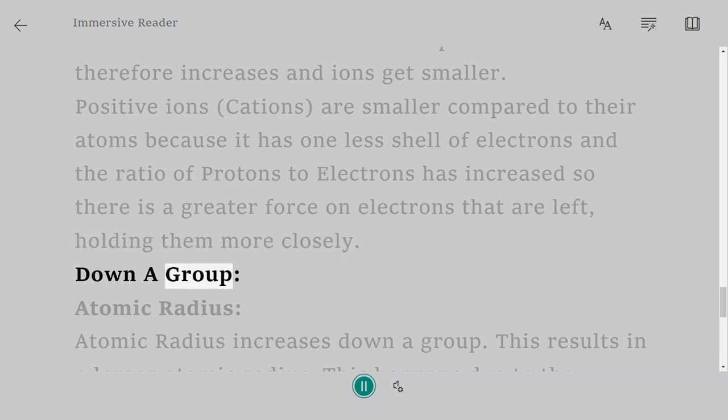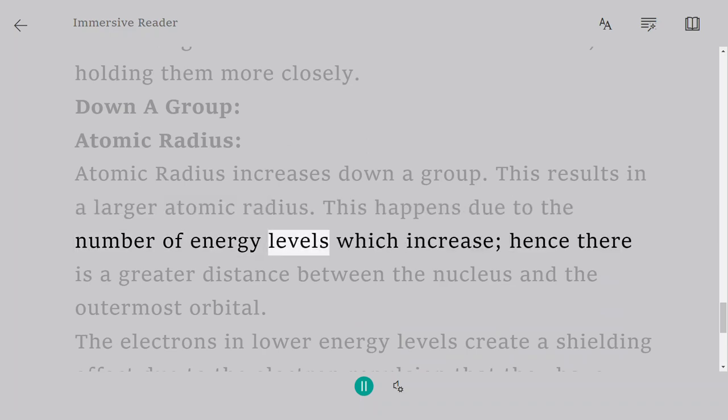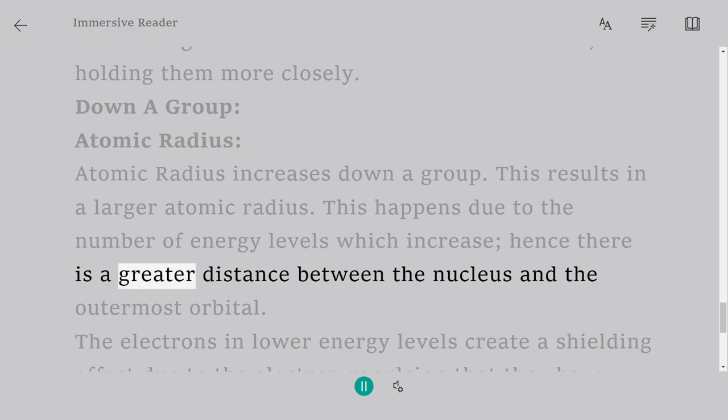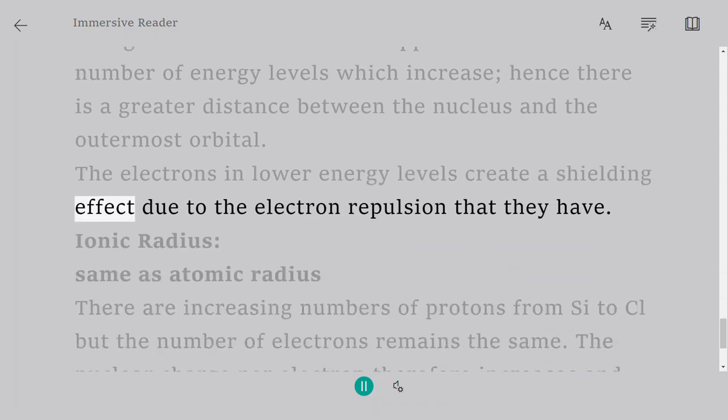Down a Group. Atomic Radius: Atomic radius increases down a group. This results in a larger atomic radius. This happens due to the number of energy levels which increase, hence there is a greater distance between the nucleus and the outermost orbital. The electrons in lower energy levels create a shielding effect due to the electron repulsion that they have.